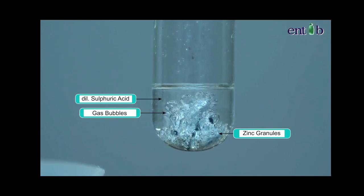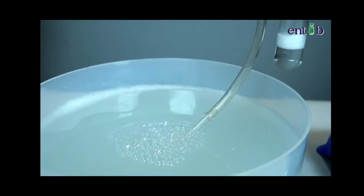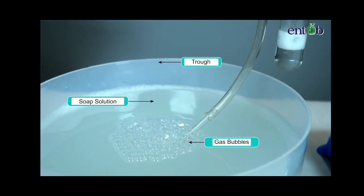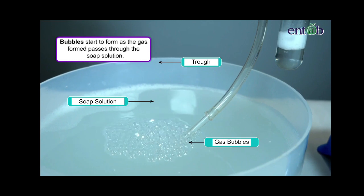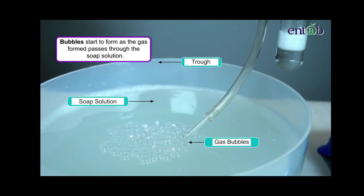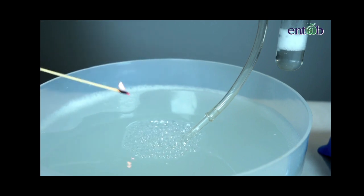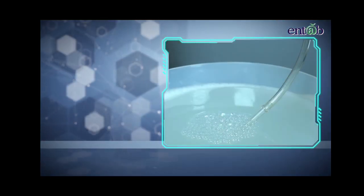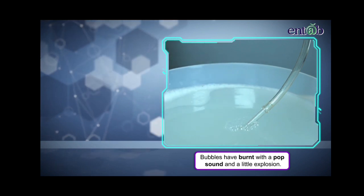To observe the reaction bubbles on the surface of zinc metal, allow this gas to pass through the soap solution. As we can observe, the bubbles start to form as the gas formed passes through the trough containing soap solution. Bring a burning splinter near the gas filled bubbles. Great.